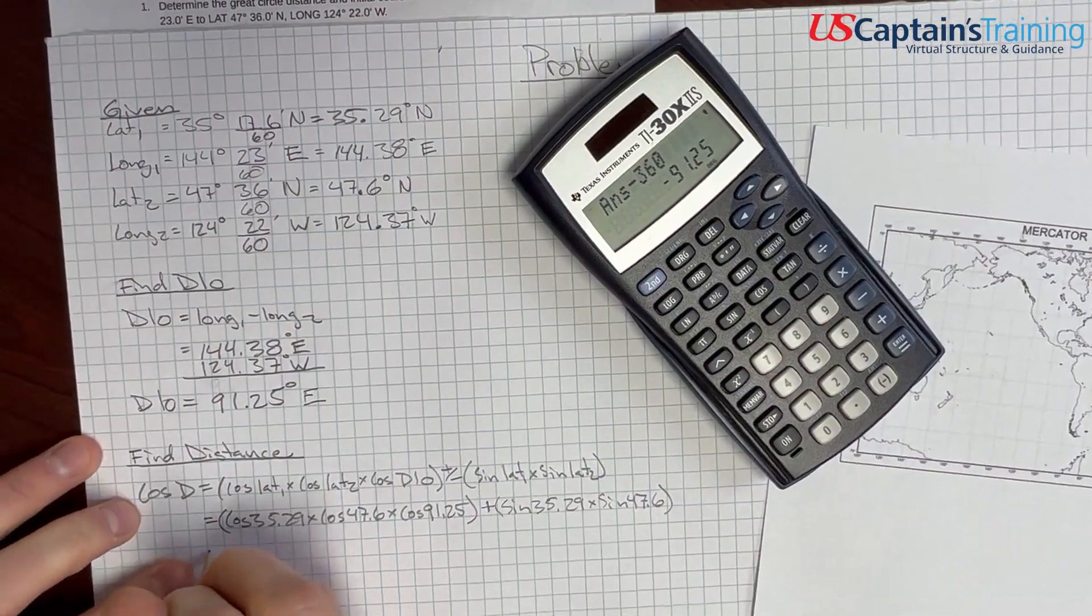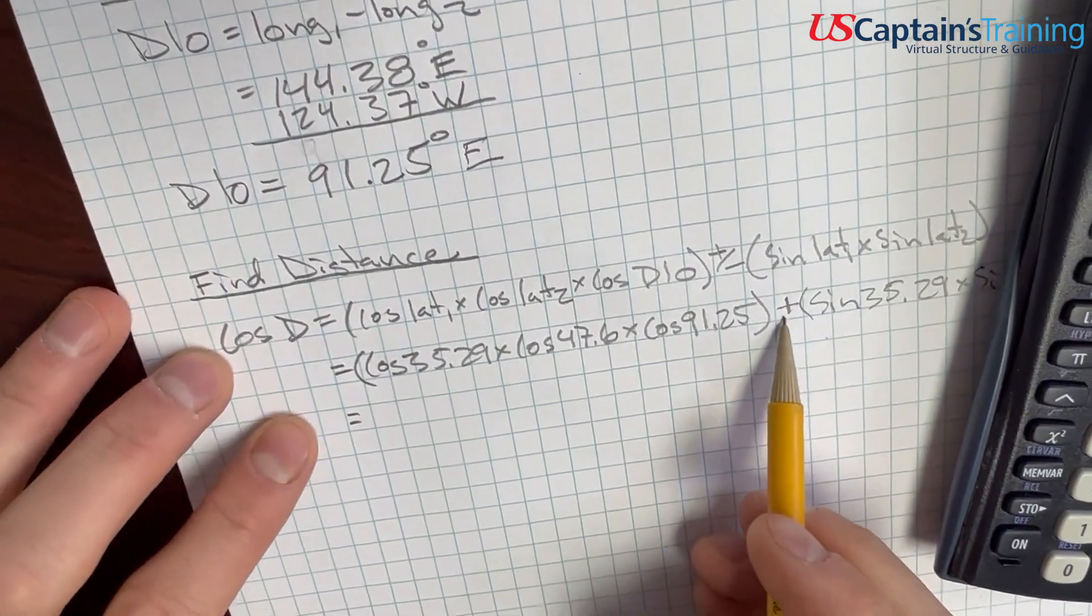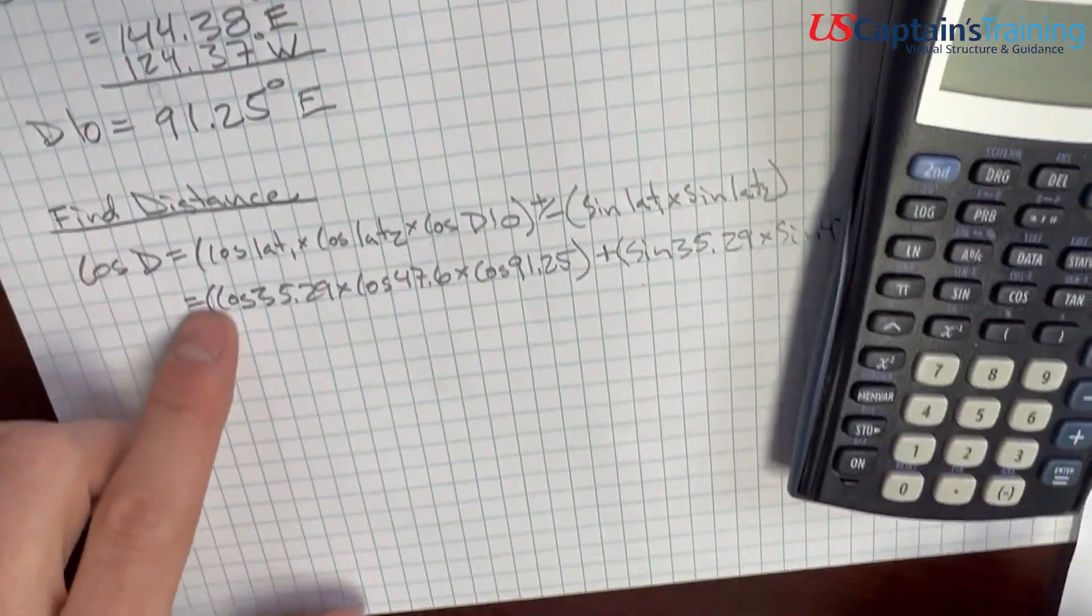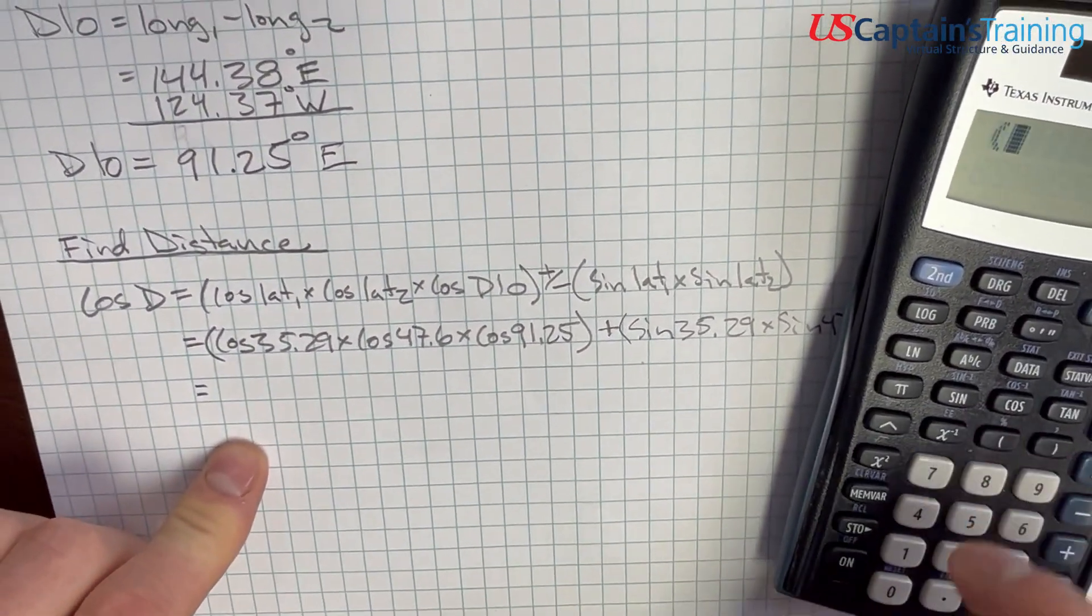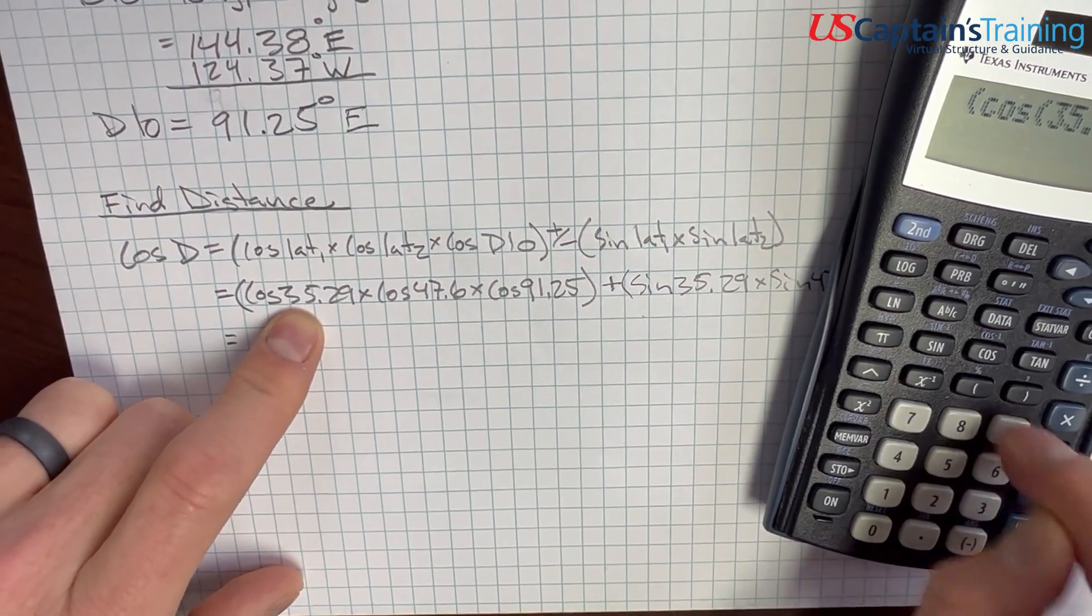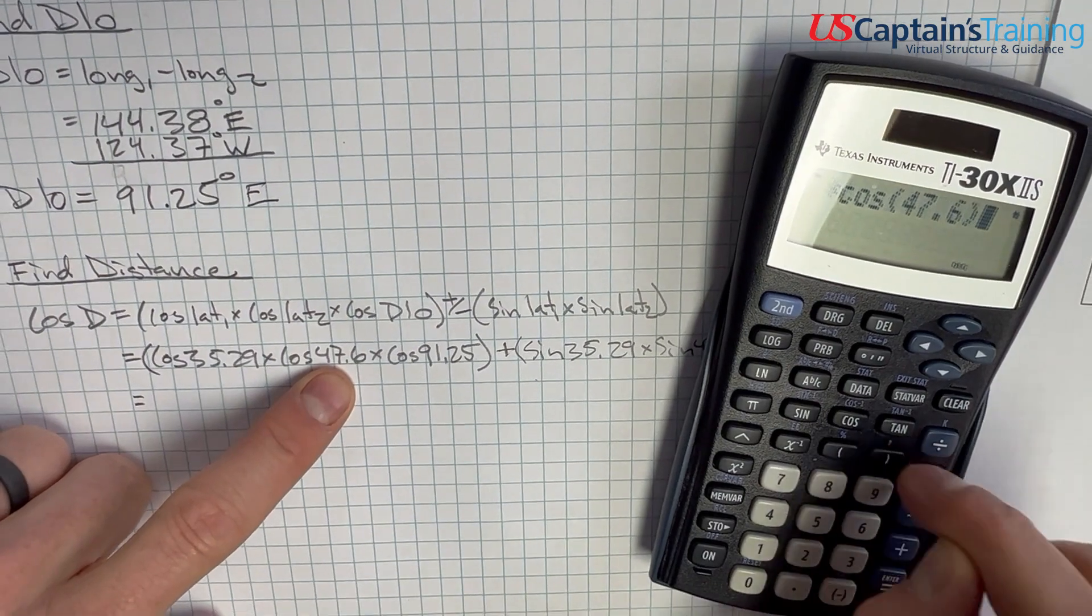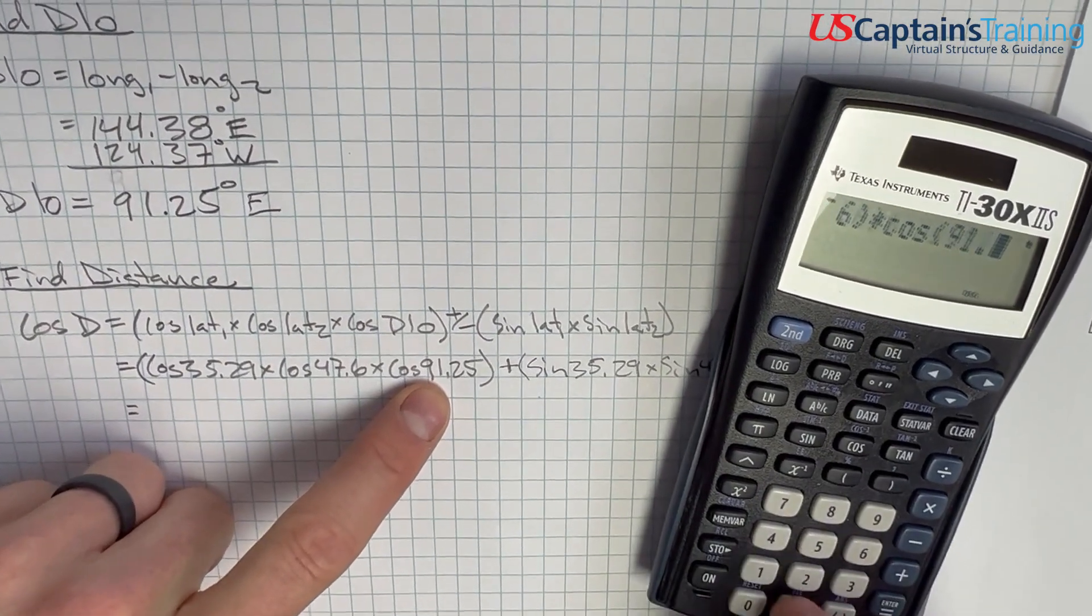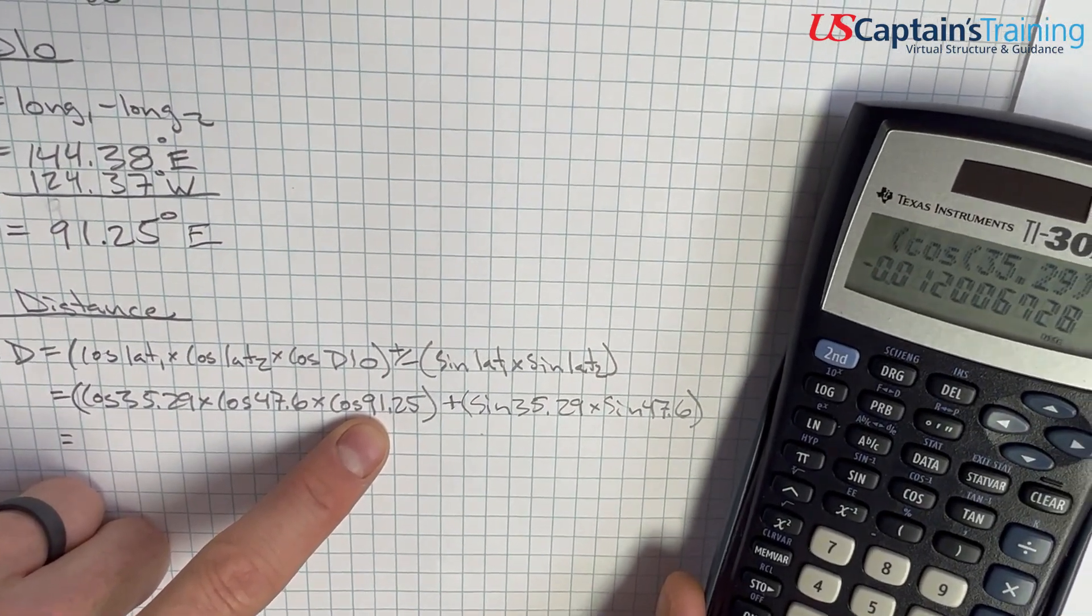And now, we just start crunching these numbers. So, you got to keep the sine straight, and then keep all your number crunching straight is the hard part. So, what I'm going to do is, because of all these cosines, they all have parentheses, you start with a parenthesis. Say, open this parenthesis, cosine 35.29, close, times cosine 47.6, close, times cosine 91.25, close, and then close out total, equals negative 0.012.